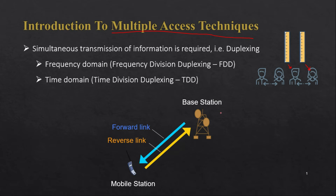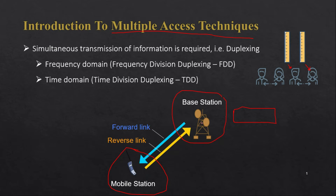The same situation occurs in a cellular system. A base station has a limited frequency band, and with this limited frequency band it needs to serve multiple mobile stations within the cell. We need to provide proper solutions so that multiple mobile stations can access the base station and communicate effectively — and for that we require multiple access techniques.